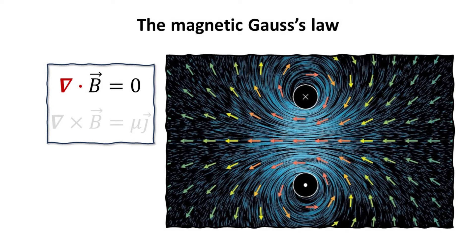The magnetic Gauss's law states that the divergence of the magnetic field is zero. In other words, there is no magnetic charges.